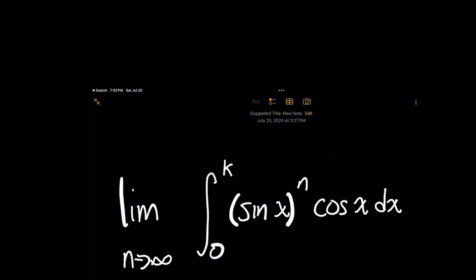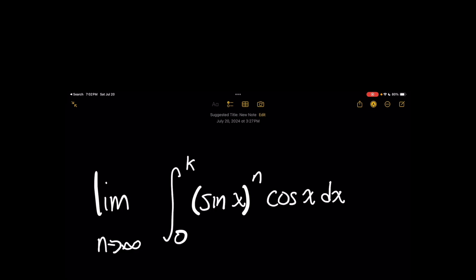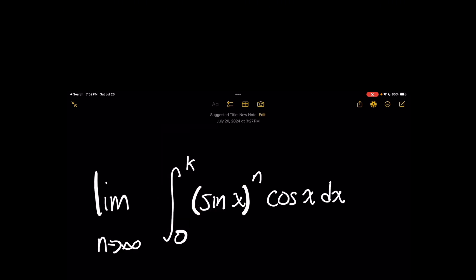Now in this video there are two key mistakes that can be easily made here. Number one, you're going to notice that if you use the original integral's limits, which are going to be 0 and k, that's actually wrong. What do you think they should be? Tell me below.